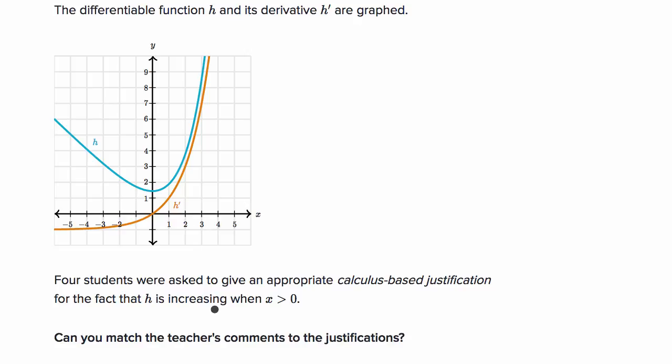Before I even look at what the students wrote, I can just look at this and see that h is increasing when x is greater than zero. But just by looking at the graph of h, that by itself is not a calculus-based justification. We're not using calculus, we're just using our knowledge of what it means for a graph to be increasing. In order for it to be a calculus-based justification, we should use calculus in some way, maybe use the derivative.